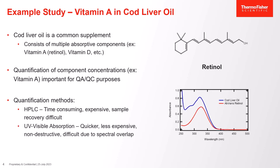This is why we would like to use UV visible absorption analysis — a method which is quicker, less expensive compared to HPLC, and non-destructive, making it easy to retain the sample post-analysis. The caveat is that the spectral overlap problem does make analysis of complex mixtures very difficult. Using cod liver oil as our example, we will show how UV visible derivative spectroscopy can be used to better analyze these complex samples.